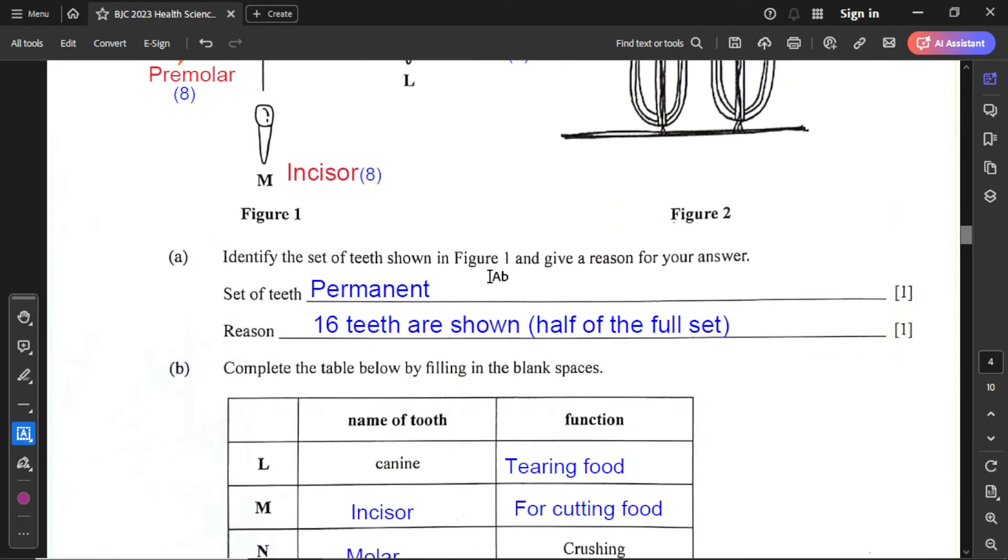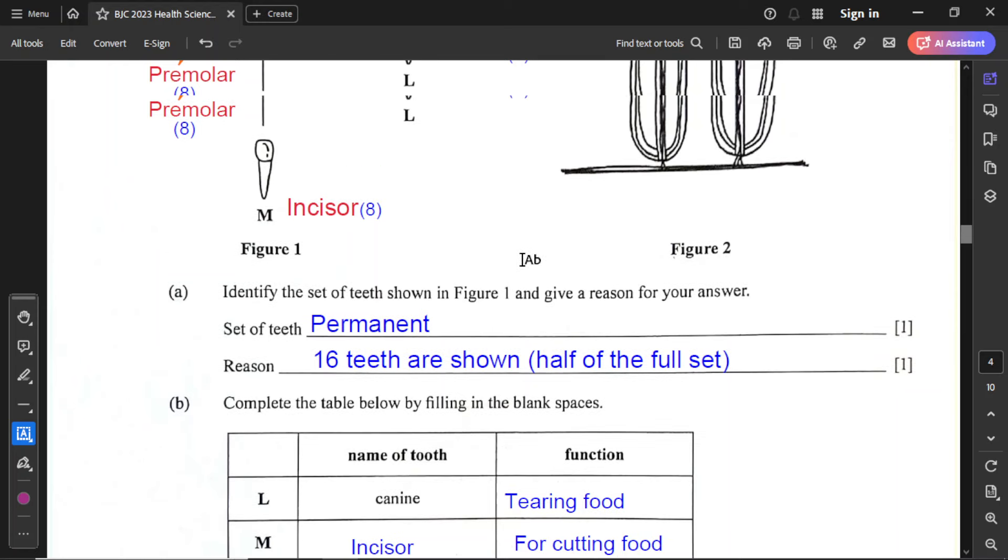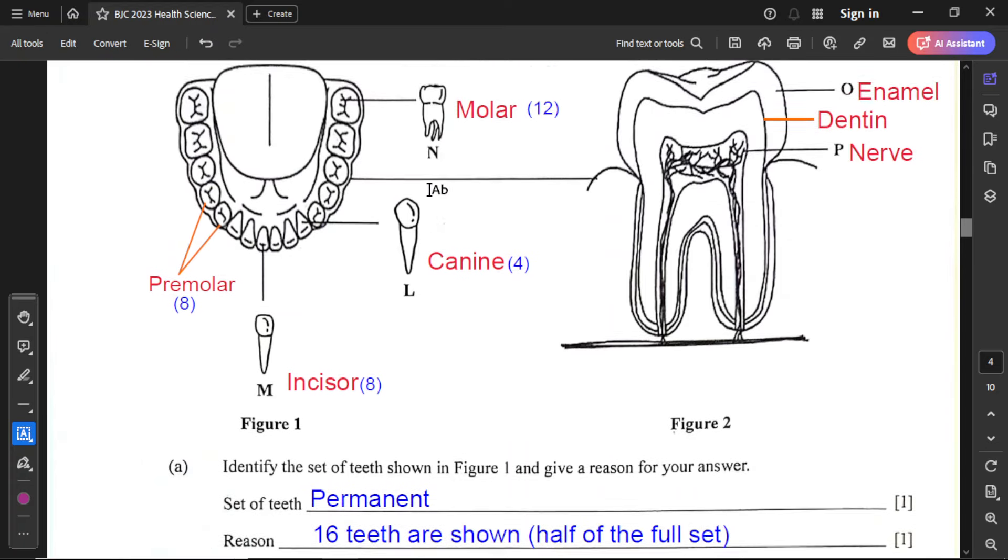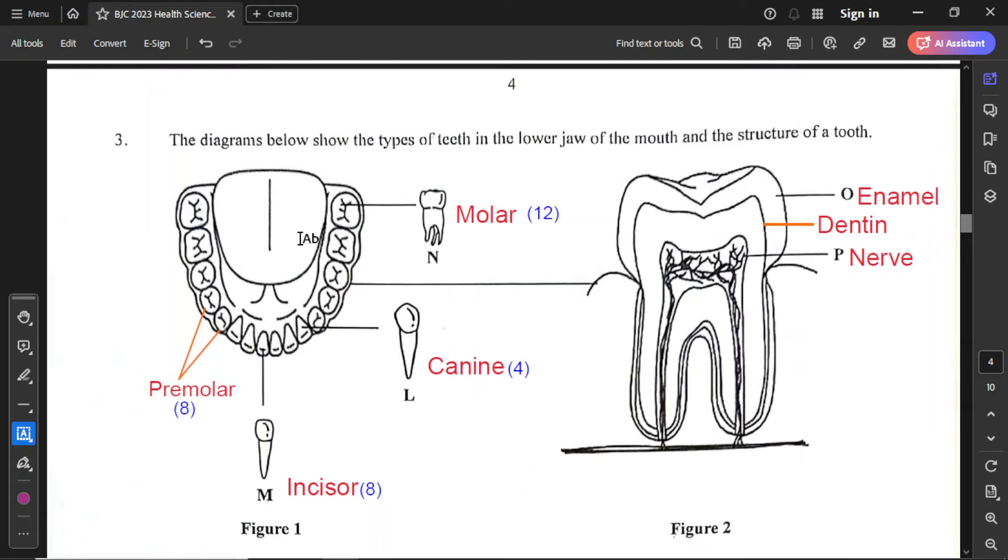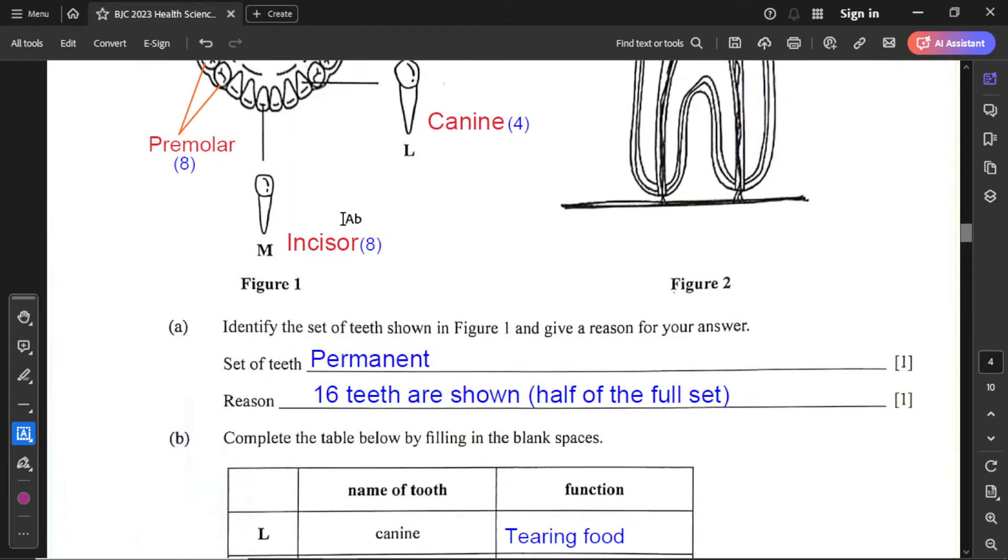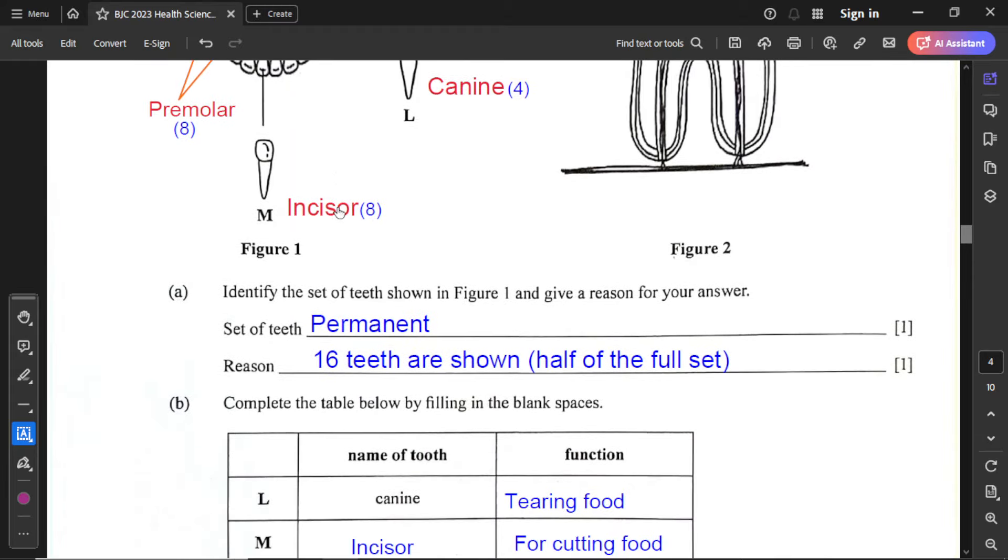For part A, identify the set of teeth shown in figure 1 and give a reason for your answer. This is the permanent set of teeth. The reason is because 16 teeth are shown, which is half of a full set. This is the lower part of the mouth - you can see the tongue. There are 16 teeth in total, so this person would have 32. And 32 is the full number of teeth for an adult, which is the permanent teeth.